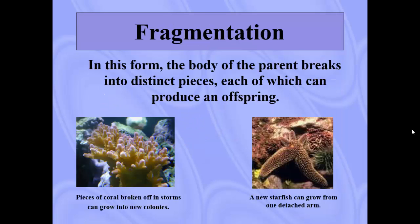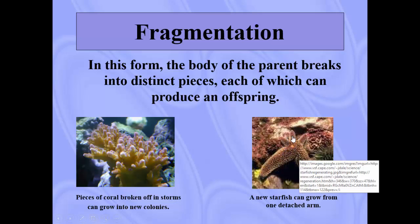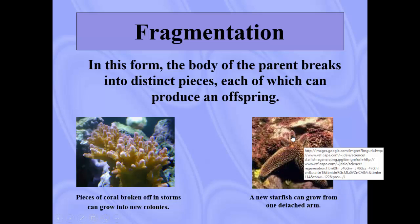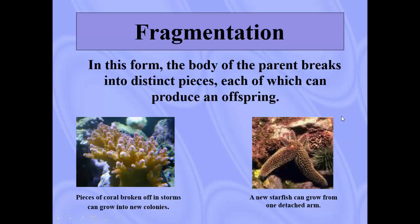Fragmentation — this one's very cool. In this form, the body of the parent breaks into distinct pieces, each of which can produce an offspring. Coral can break off and the piece that breaks off can form a whole new colony. Starfish can grow from one detached arm. We see here that this starfish had several arms cut off, and we have new little arms coming out from it. You could take one five-armed starfish, separate each piece, and have five different starfish growing from it. I don't recommend ripping off a starfish's legs — it's painful and inhumane — but if part of it gets eaten by an animal, it has adapted to allow itself to grow back.